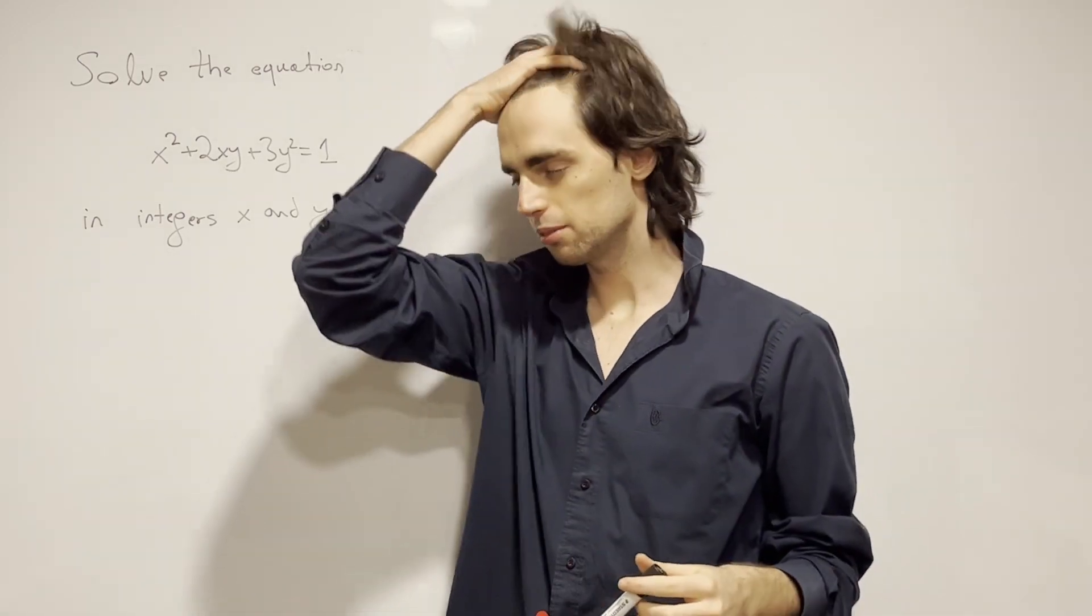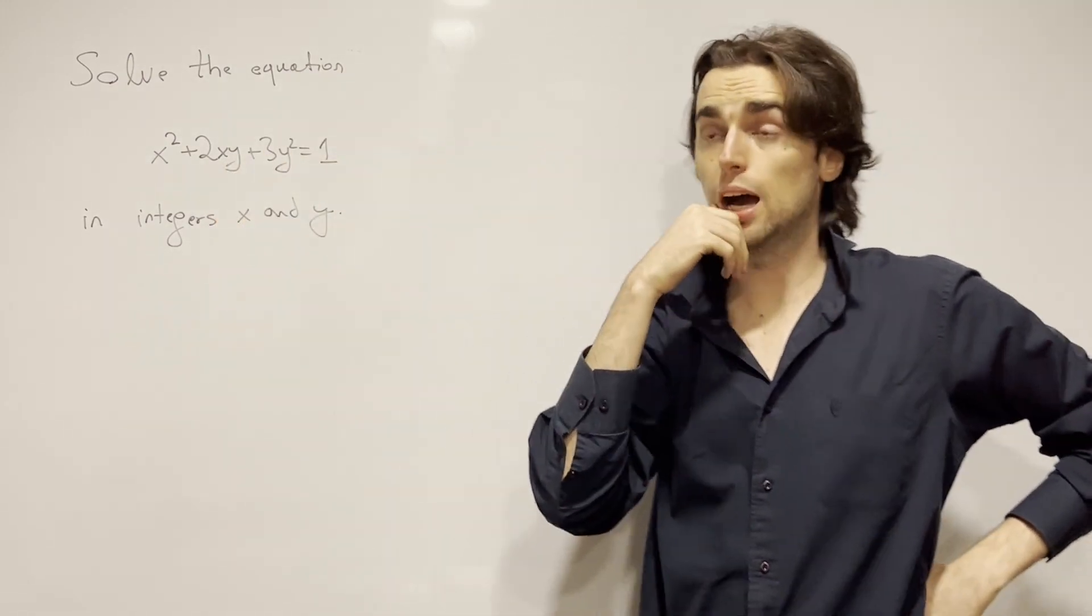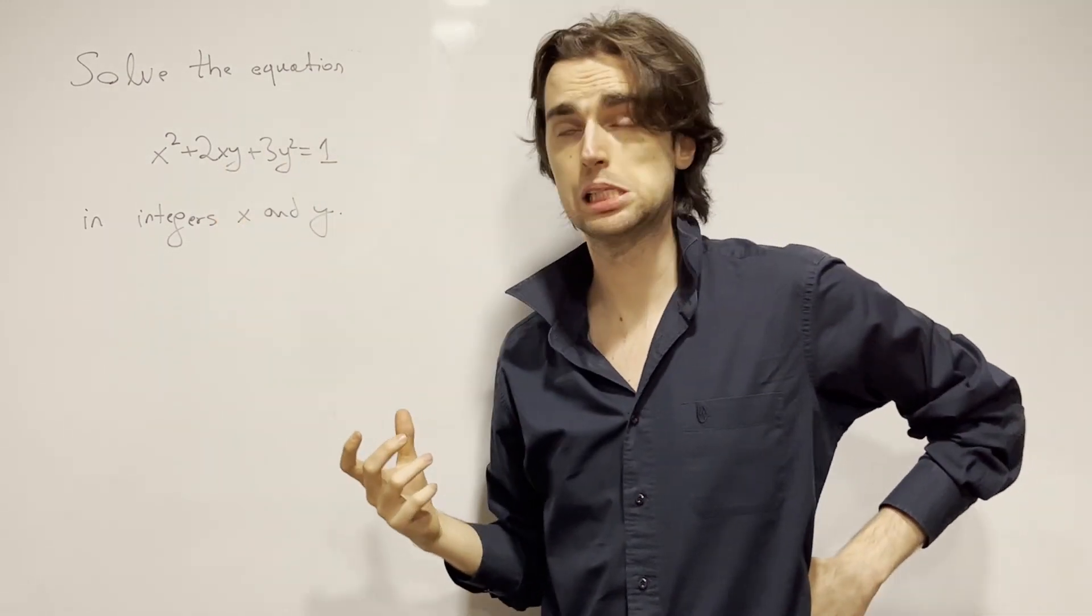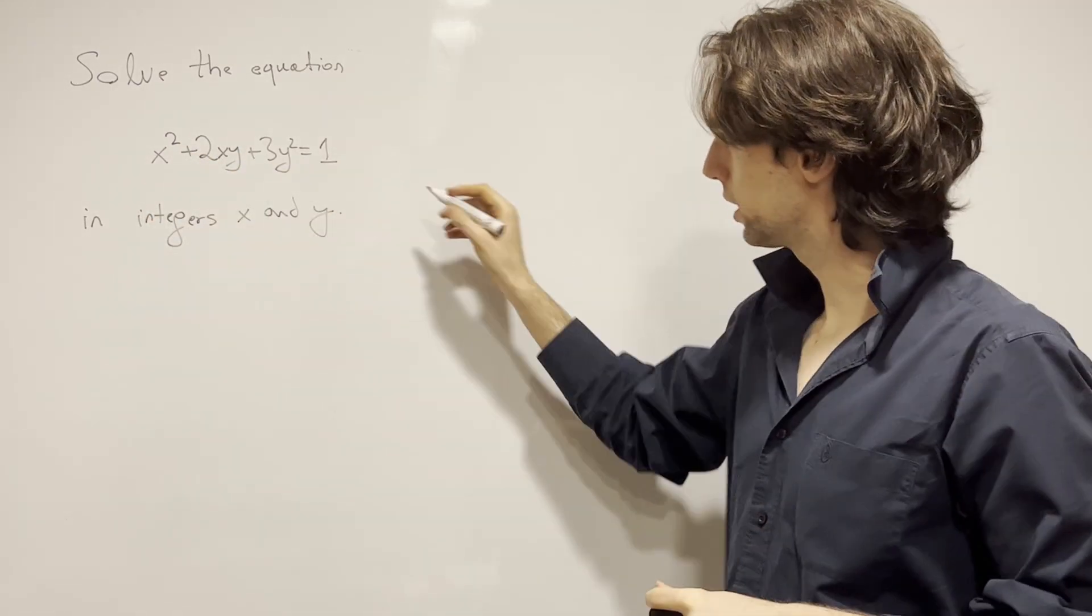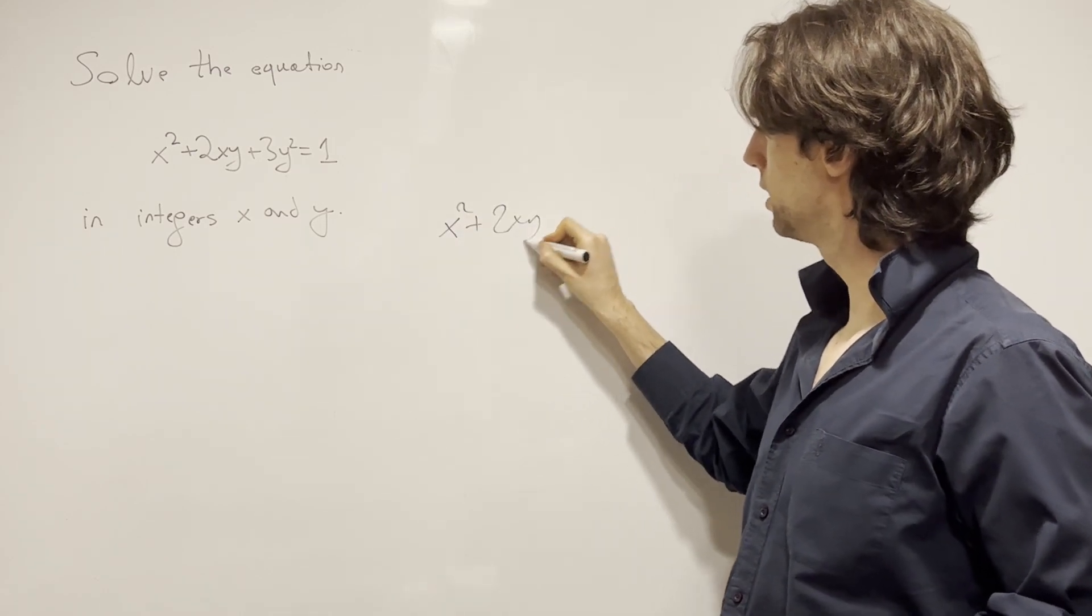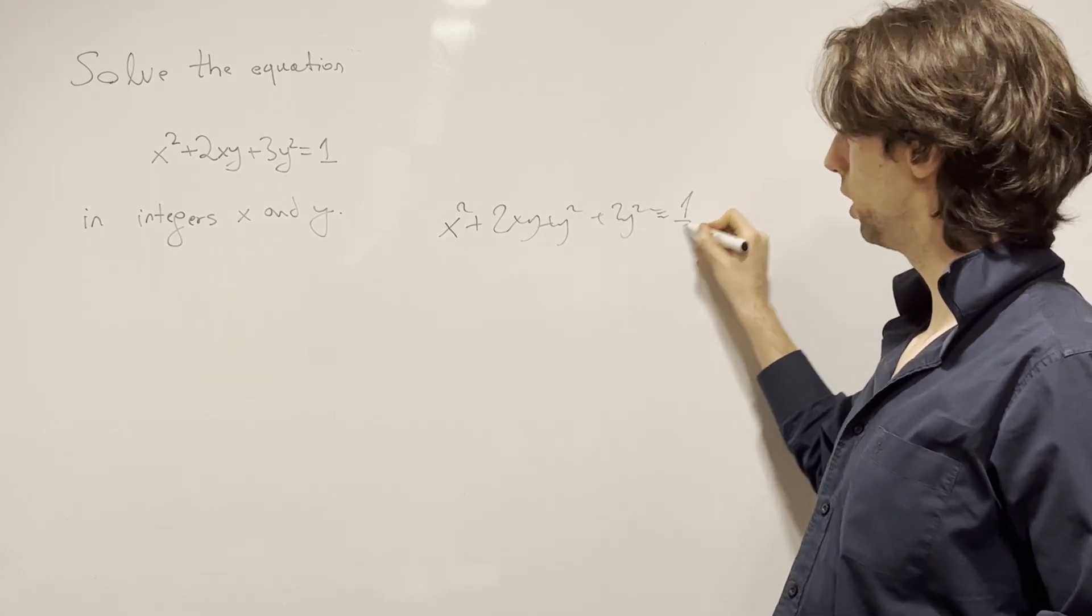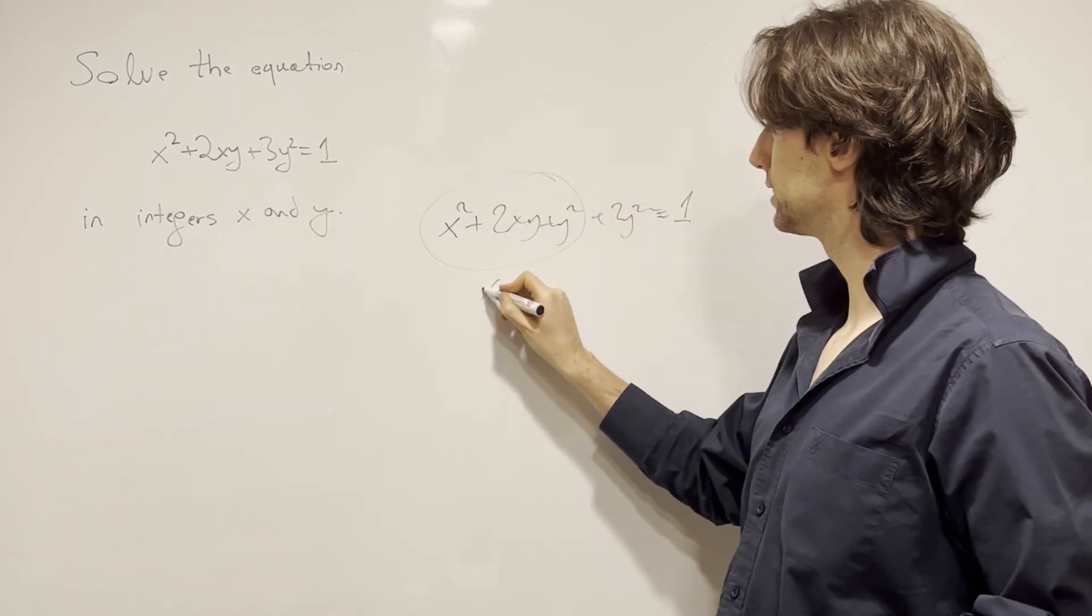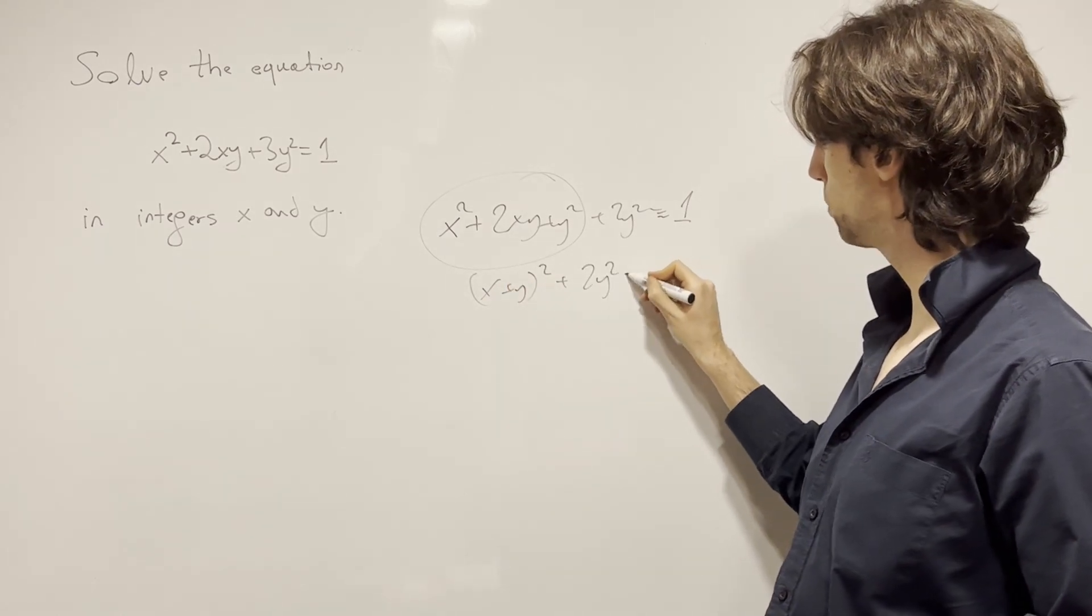So then you might say, to go back to the problem, okay, I have 2xy. How can I get rid of this 2xy? You see, wait, I have x squared. If I have y squared, I can complete the squares. So I can write this down as x² plus 2xy plus y² plus 2y² is equal to 1. And then this is (x + y)². And then this is plus 2y² is equal to 1.